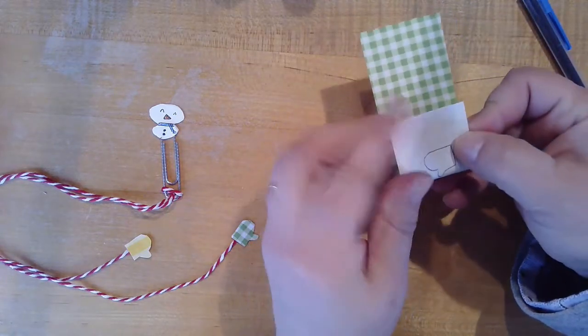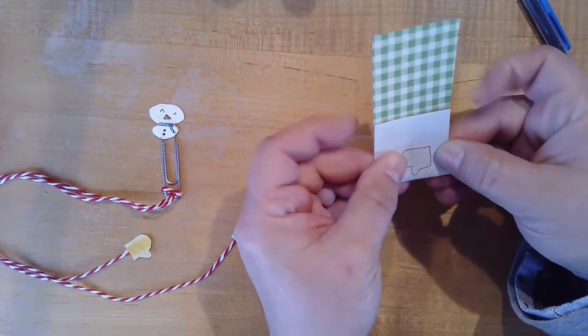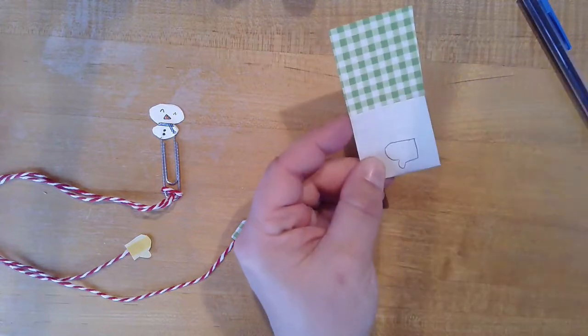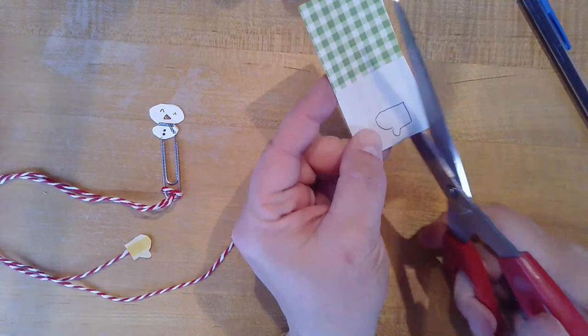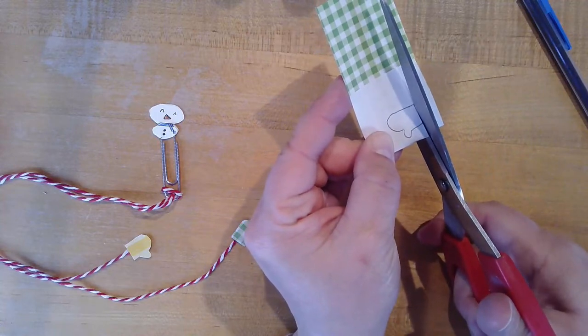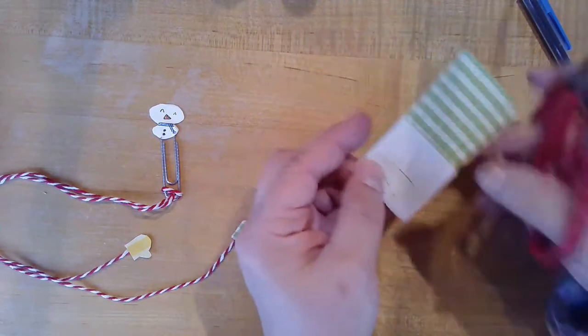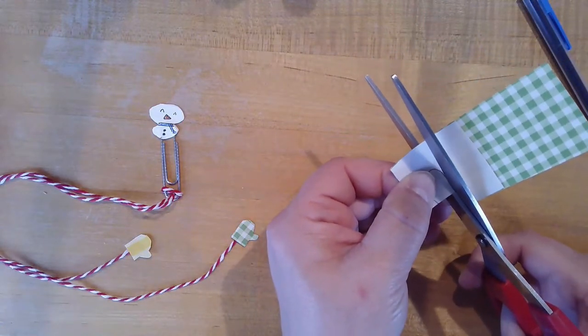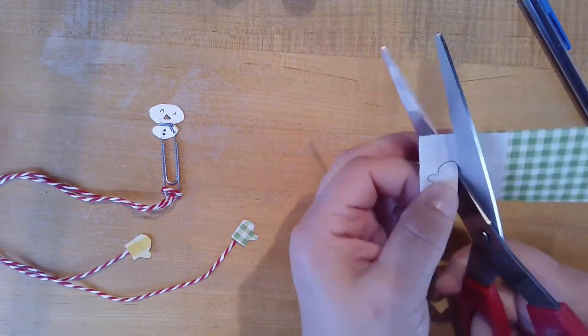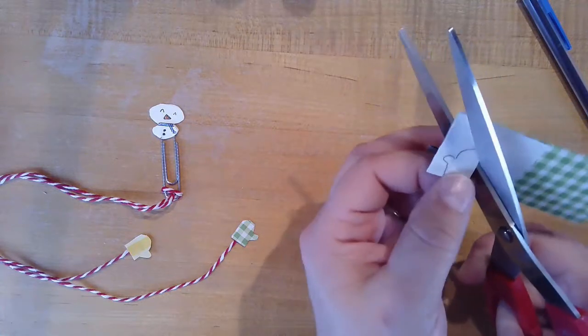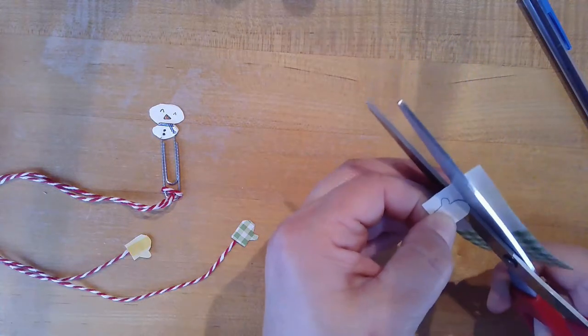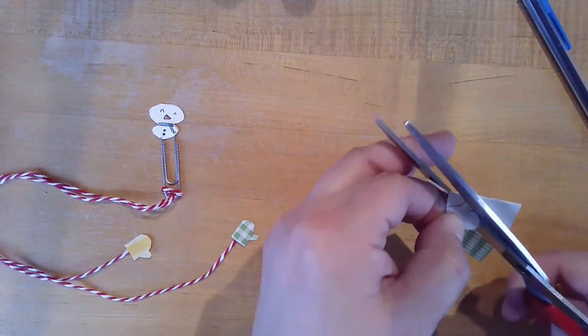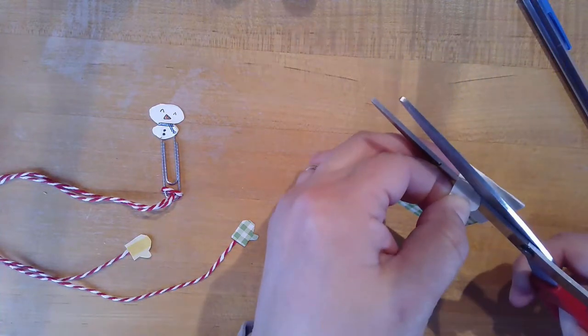Once again, I'm going to fold the paper over so that I get two equal sized mittens evenly matched. Again, you don't have to make your mittens very big. It's up to you the size that you want. And you can make your mittens all the same paper or you can do one of each paper type like I did.